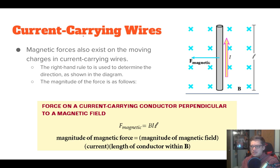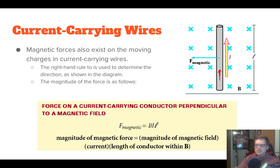Now let's look at a current-carrying wire. Because you have moving charges within the wire, you can also have a force acting on those moving charges. Inside the current, charges are moving this direction — the current going into the page. Using the slap rule, the force comes out in a specific direction, as drawn. The formula to calculate the magnetic force on a current-carrying wire is F-magnetic = BIL, where B is the magnetic field strength, I is the current, and L is the length of the conductor inside the magnetic field — not the overall length, just the portion within the field.